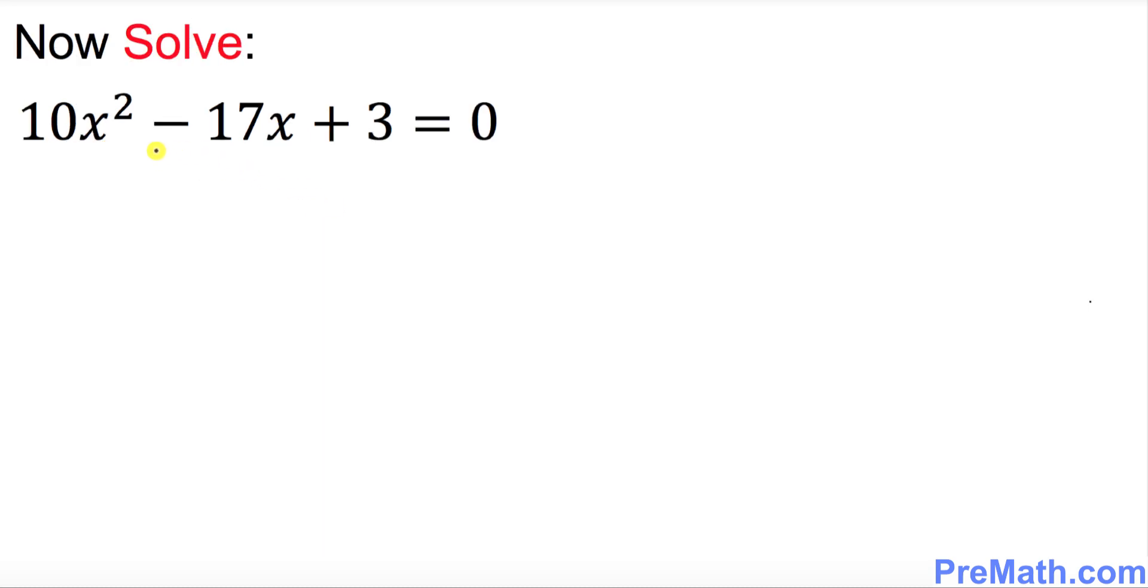Now in this next step we are going to go ahead and solve for x. Here are the factors that we figured out in our previous step, and we are going to set them equal to 0. Now we're going to split them out. I'm going to say 2x minus 3 equals 0 and 5x minus 1 equals 0. Let's go ahead and solve for x. I want you to move this negative 3 on the other side, becomes positive 3. Divide both sides by 2, so x turns out to be 3 over 2 as one of our solutions.